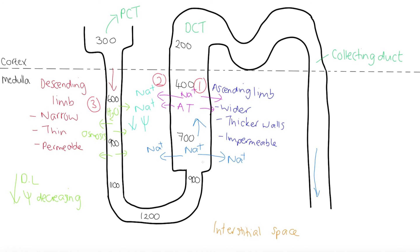Then as the filtrate enters the ascending limb, sodium ions move out into the interstitial space by diffusion. As we move up the ascending limb, sodium ions continue to leave, so the water potential inside the ascending limb increases. The filtrate then moves into the distal convoluted tubule and into the collecting duct. This is a tricky topic, so you may need to watch this a couple of times — if you have any questions, do ask.